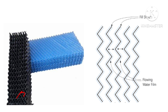Film type fills increase the surface area by forming a small, thin film of water on the surface. When water enters this fill, it forms a thin film of water on both sides of the surface. Due to the formation of this thin film, the surface area of water gets increased many times.